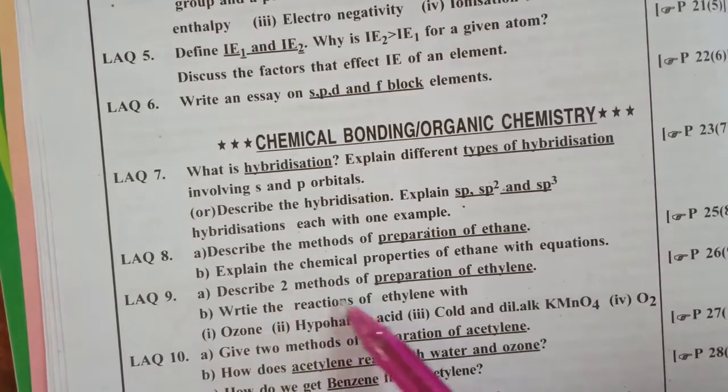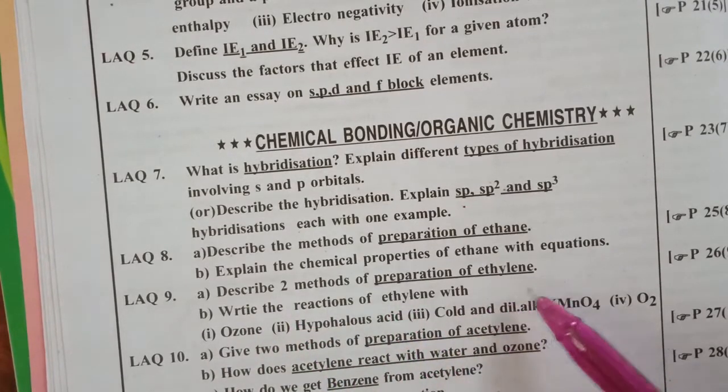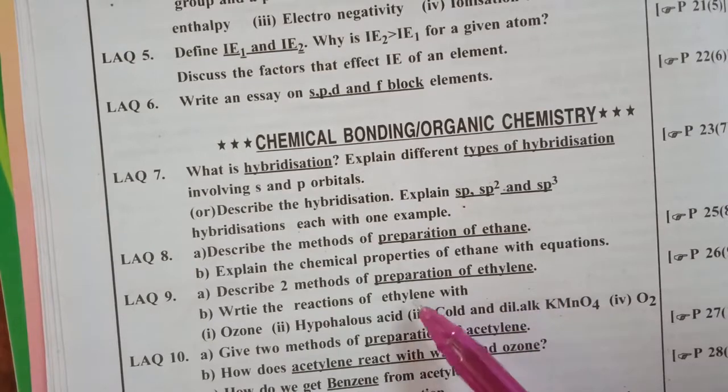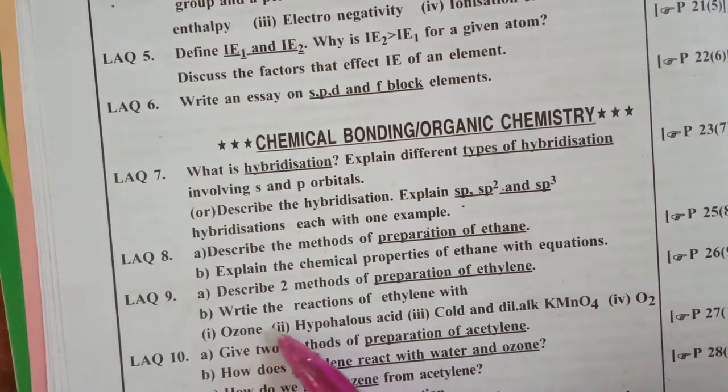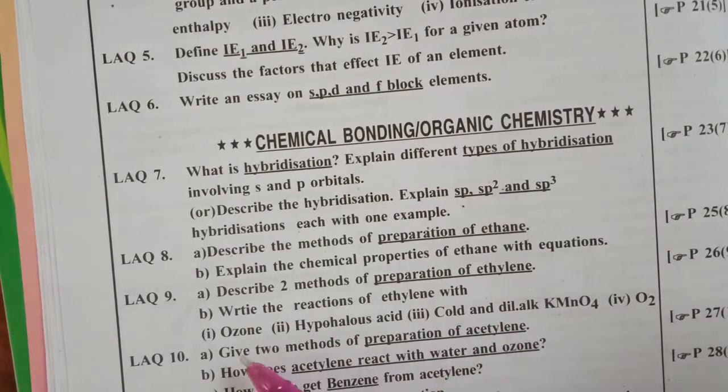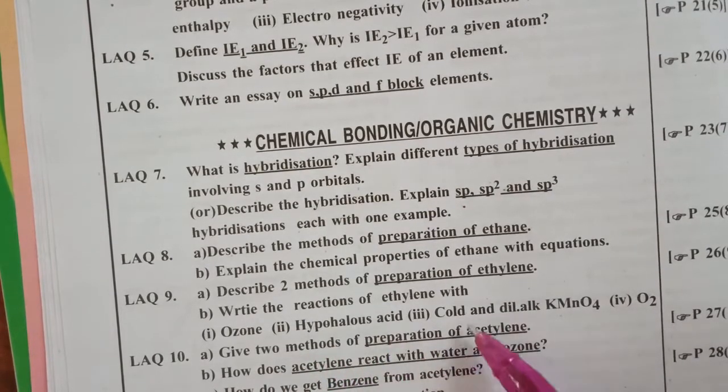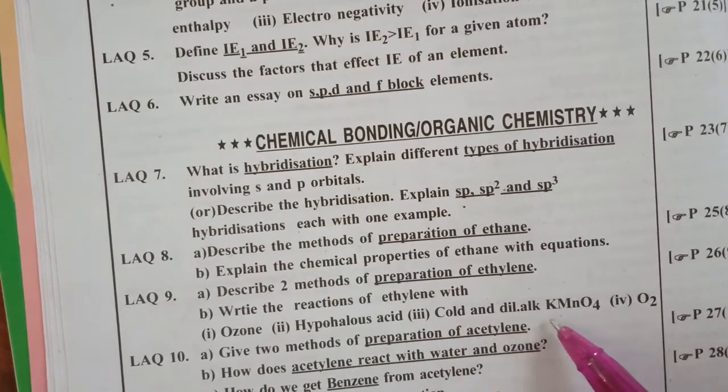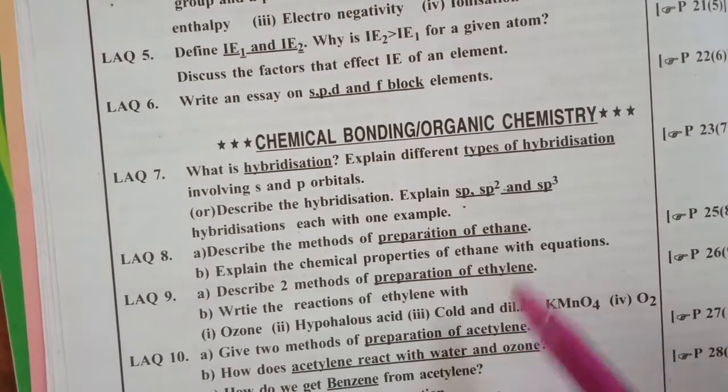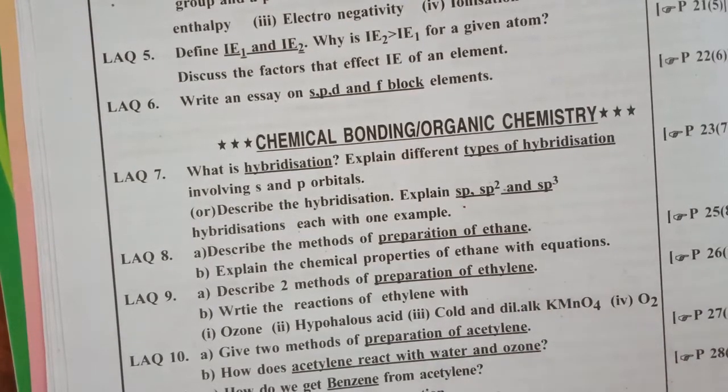Describe two methods of preparation of ethylene. Ethylene preparation methods we should know. Write the reactions of ethylene with ozone, hypohollus acid, cold and dilute KMnO4 potassium permanganate, and oxygen O2.